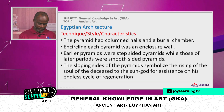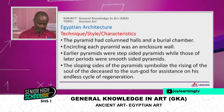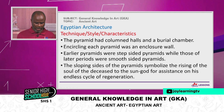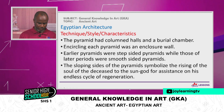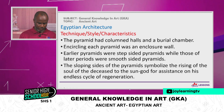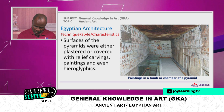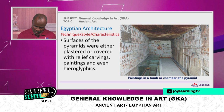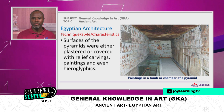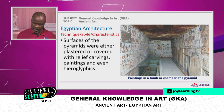The sloping sides of the pyramids symbolize the rising of the soul — the Ka of the deceased — to the sun god for assistance on his endless cycle of regeneration. The surfaces of the pyramids were either plastered or covered with relief carvings, paintings, and even hieroglyphics. Look carefully at the image — that's a typical tomb chamber, and you can see a lot of paintings on the walls. Even though they were architectural pieces, there were paintings and sometimes writings called hieroglyphics on the walls of the tombs.